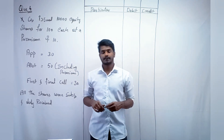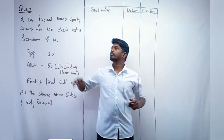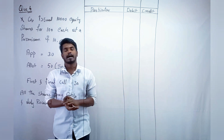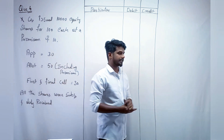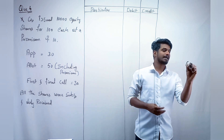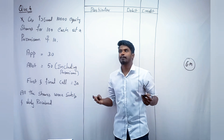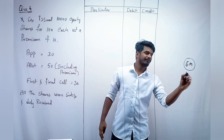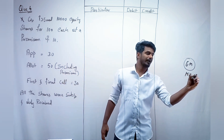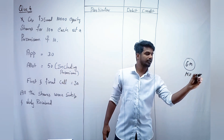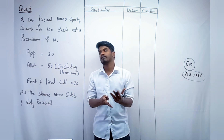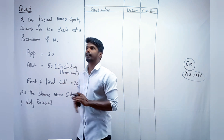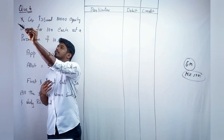Hello everyone, we are moving to the fourth question which is accounting for share capital. This question is for six marks and the probability of it appearing in the exam is around 15 to 20 percent. Let us start with question four and read it carefully.